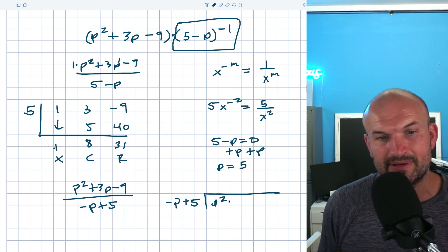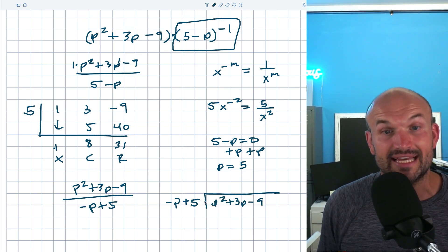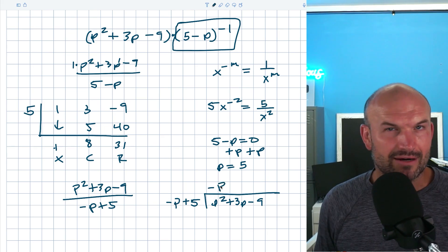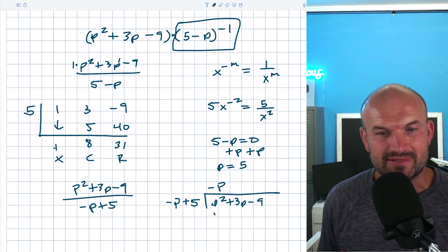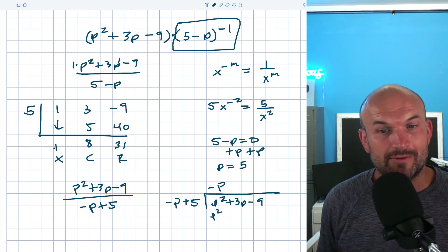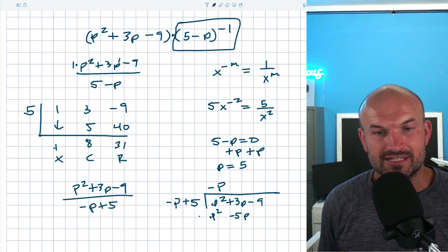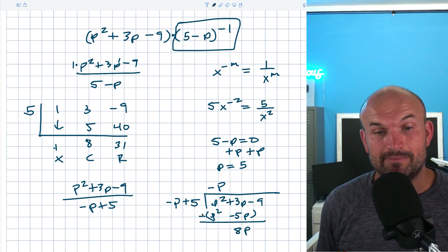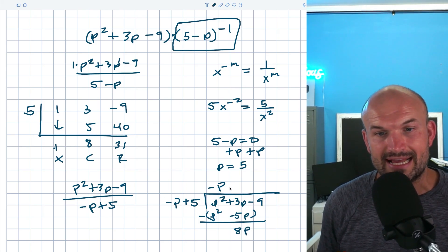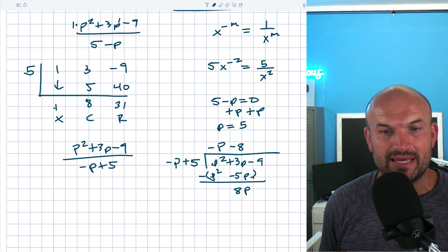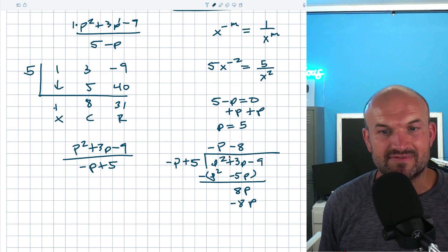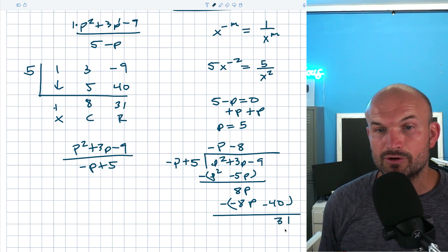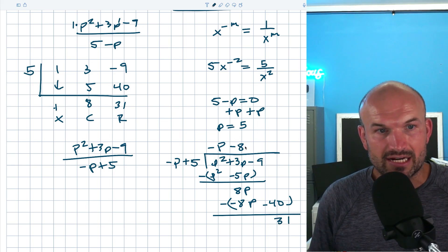And the easiest way to kind of look at that is just to look at that using long division. If I go and write negative p plus 5 and write p squared plus 3p minus 9 in long division, what you can see here is when I divide negative p into p squared, I'm going to get a negative p. Now, again, let's just do this long division because it is such a short problem. Negative p times negative p is going to be p squared. Negative p times 5 is going to be a negative 5p. Go ahead and subtract the rows here, right? And therefore, that's going to give me 0p squared. And this is going to give me a positive 8p. Negative p divides into 8p a negative 8 times. Negative 8 times negative p is going to be a negative 8p. Negative 8 times 5 is going to be a negative 40. Again, go ahead and subtract your rows. What you're going to get here is a positive 31.